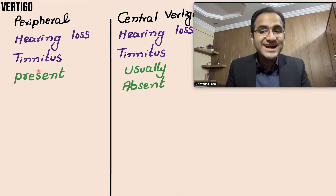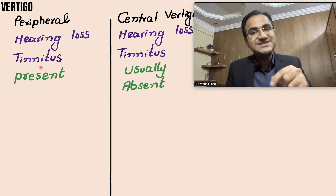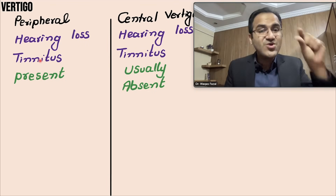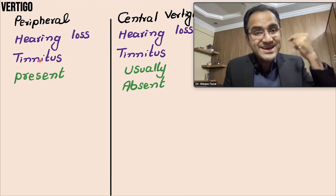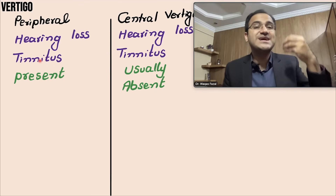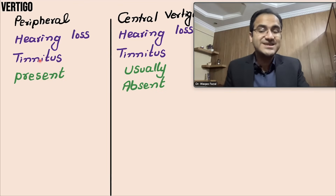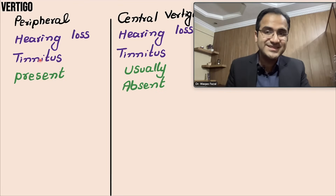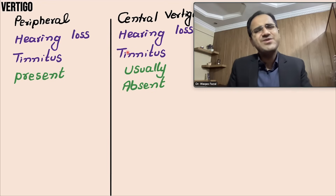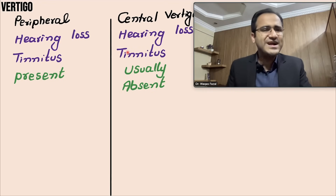Hearing loss and tinnitus will be present in peripheral causes because the problem is with the ear. In central vertigo, tinnitus and hearing loss are usually absent, though in some rare cases tinnitus may also be found.